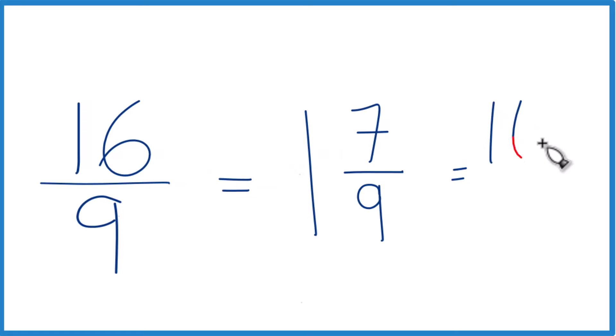We just bring the 9 across and we get what we started with. That's how you do it. This is Dr. B writing 16/9 as a mixed number. Thanks for watching.